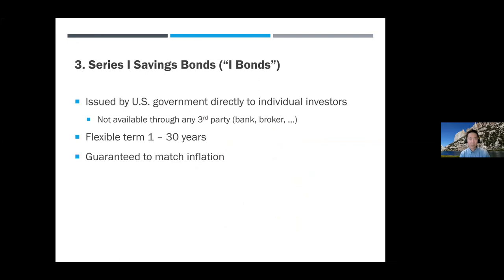My next alternative is Series I Savings Bonds. Many of you may already be familiar — they're also called I bonds. The Series I savings bonds are issued by the U.S. government directly to individual investors. Institutions don't get to participate, so you can't get them from a bank or broker — you have to go to the U.S. government. You have a very flexible term: you can buy an I bond and hold it for one year or up to 30 years. I started buying I bonds since 2001, so my oldest bond is already 20 years old.